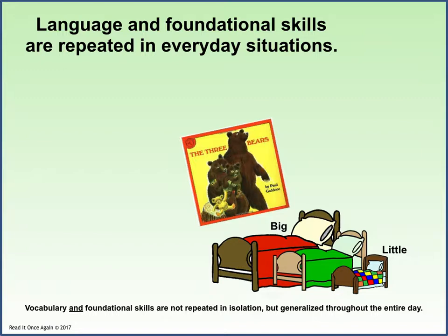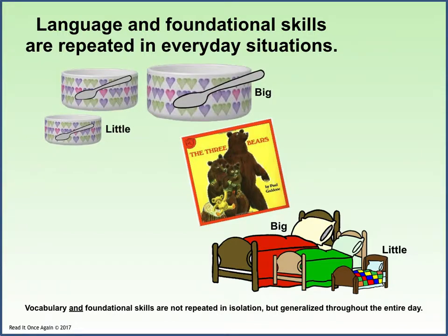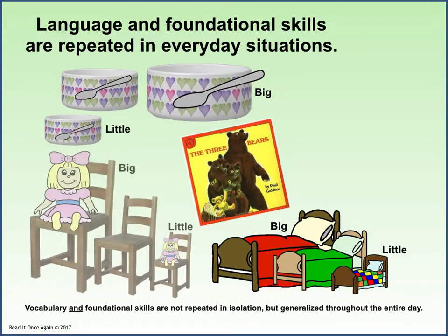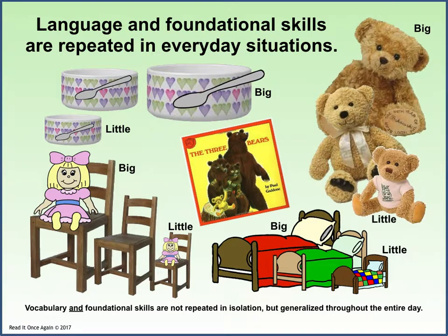Here is a quick example of how you might include vocabulary and foundational skills throughout your classroom for a story based on the Three Bears. The foundational skills featured are big and little. At snack time, the children can choose and eat porridge out of a big bowl or a little bowl, with big and little spoons. The dramatic corner has a big chair and a little chair. Use different sized bears in the reading corner. All of these props can be used during story time and incorporated to teach big and little as the book is being read.